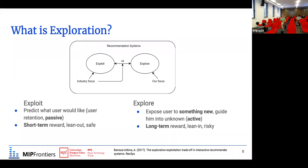From the other side of this spectrum, you have the exploration paradigm, where music recommendation systems try to recommend something quite far from user preferences. It doesn't have a sure hit to be liked by the user — it is much more risky and lean-in from the user's perspective because it requires effort to decide if they like it, but it has potential to contribute to long-term reward.